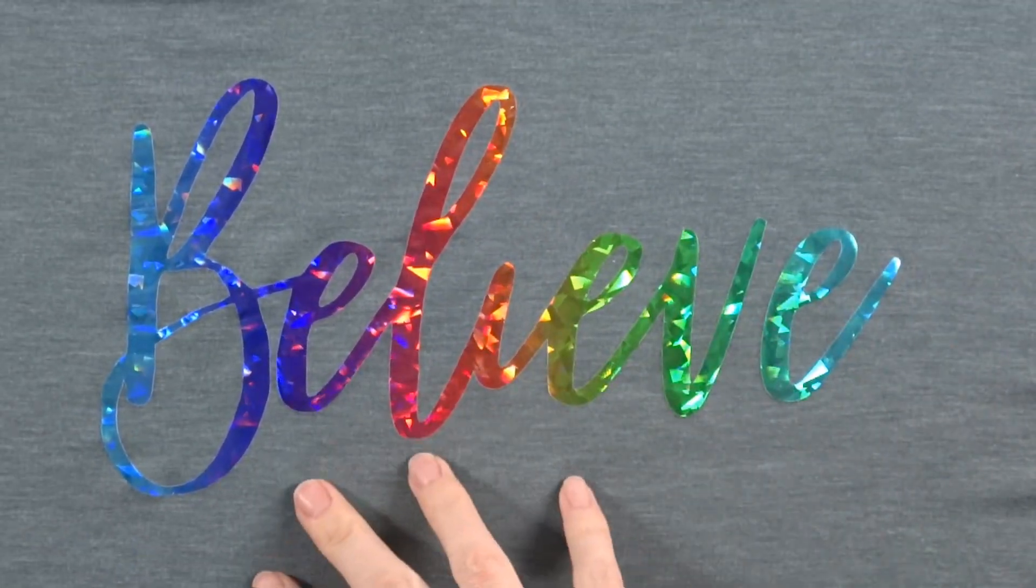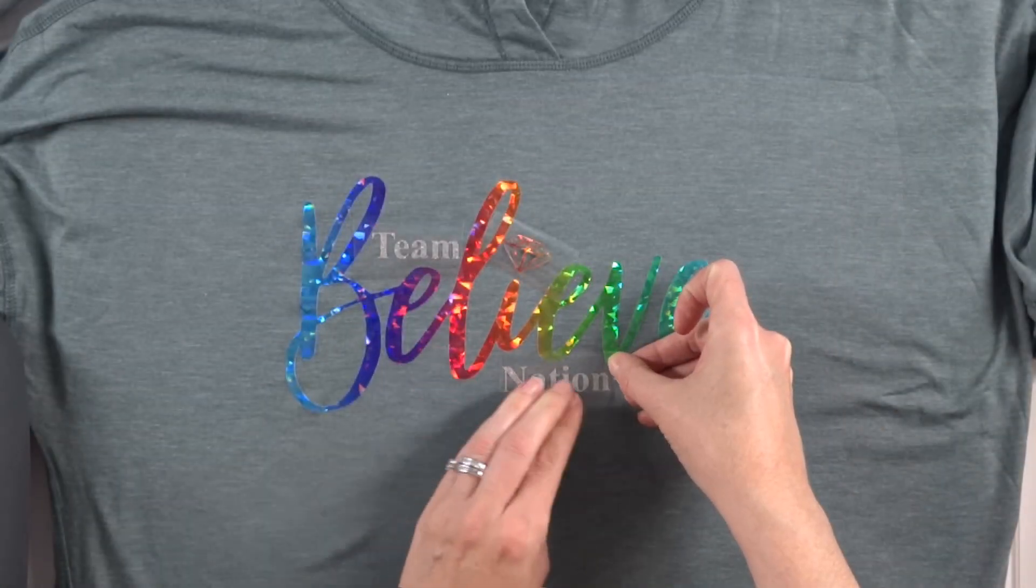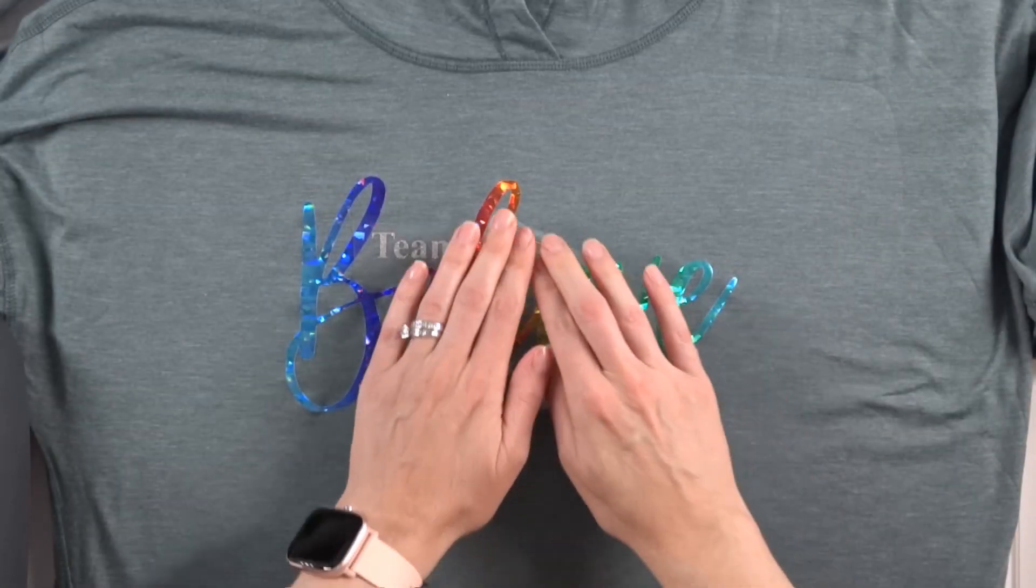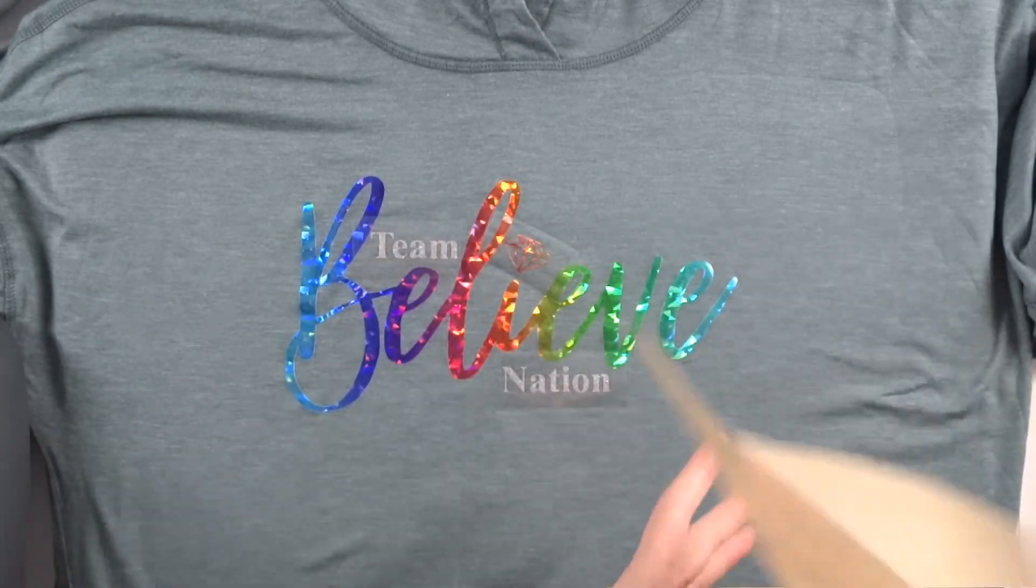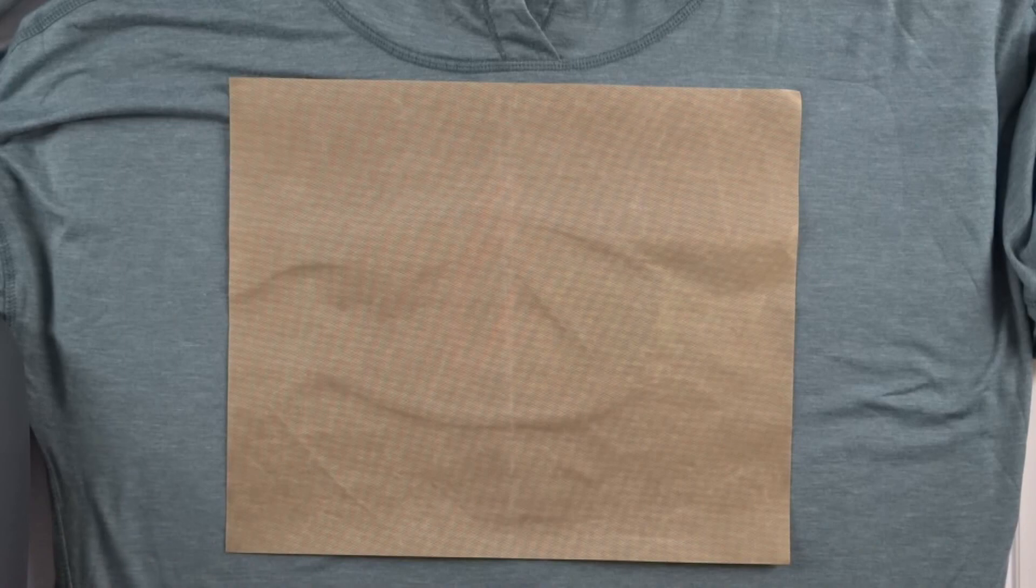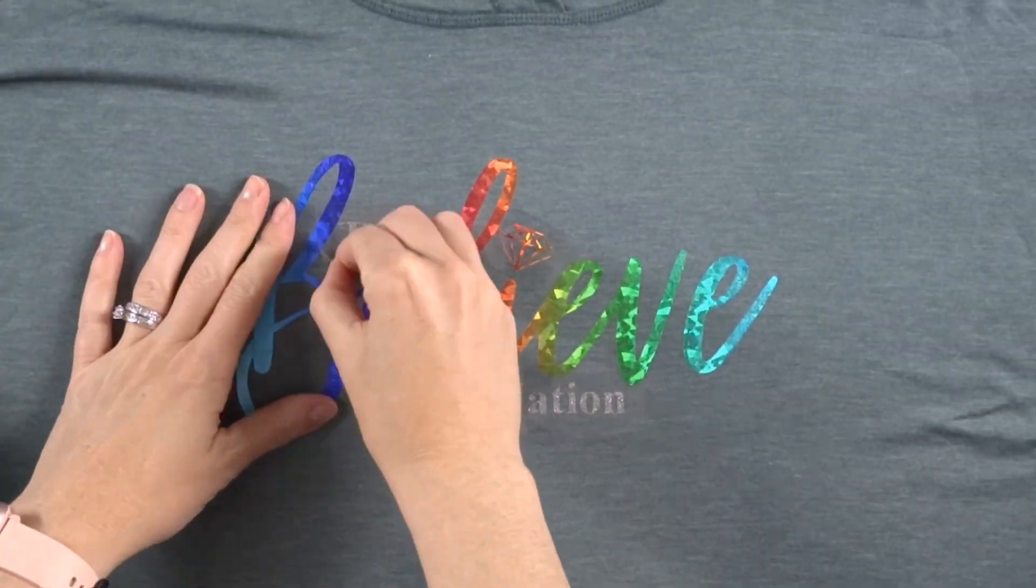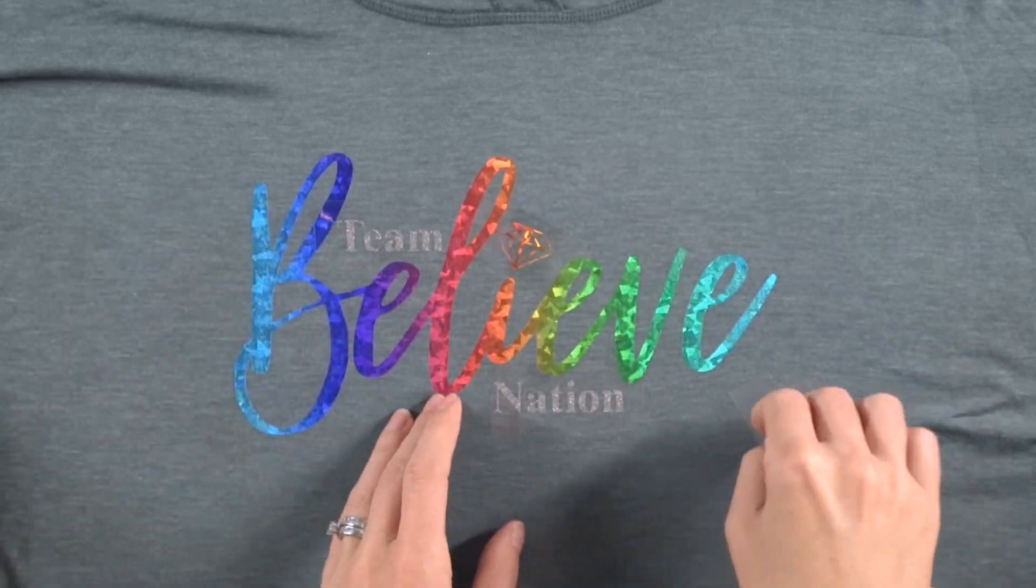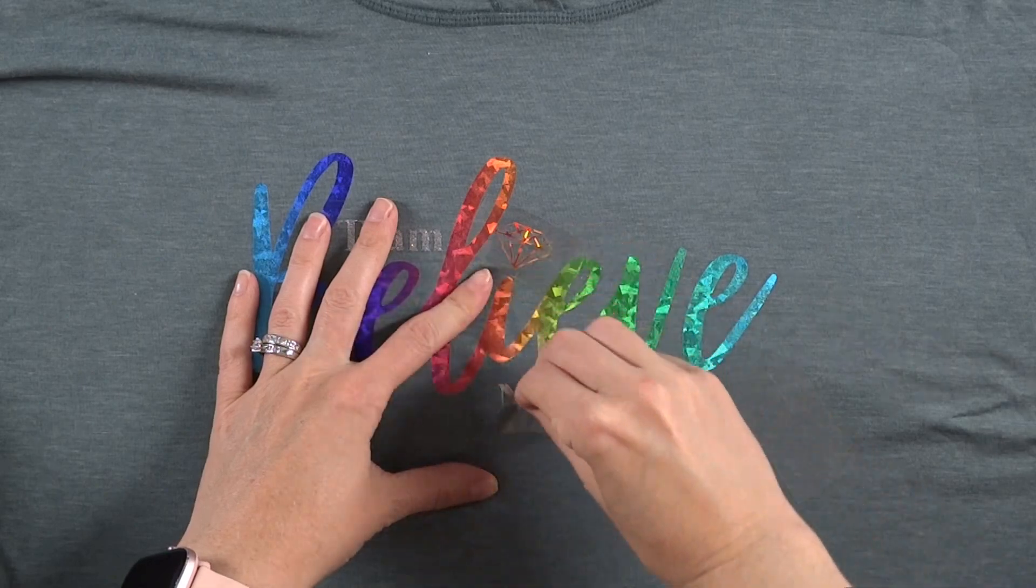Some iron-on transfer vinyl is cool peel and some is hot or warm peel. That means you're going to pull that clear piece off when it's cooled down or not. This one's cool peel, so now I'm placing on the words 'team nation' and a little diamond over the I. This is the team I belong to for Beachbody. I'm a coach and this is the name of our team, so I'm making us shirts.